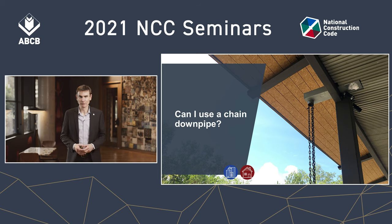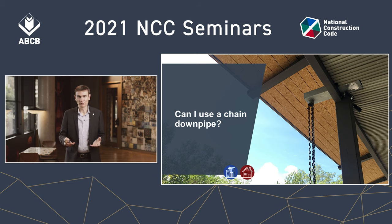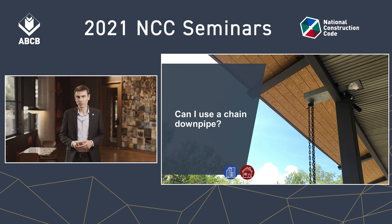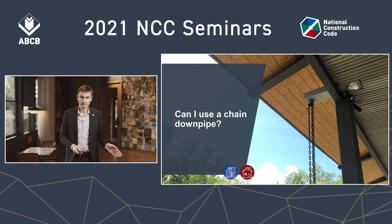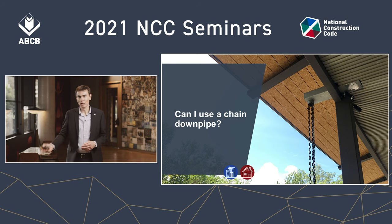We'll look at this from the perspective of Volume Two predominantly, but we will also cover Volume One. In Volume Two the provisions are set out in the Acceptable Construction Practice or ACP, and Volume One refers to AS 3500.3 for the drainage requirements. AS 3500.3 is also an acceptable construction manual for Volume Two. Whether you use the provisions within the NCC or AS 3500, the answer is the same.